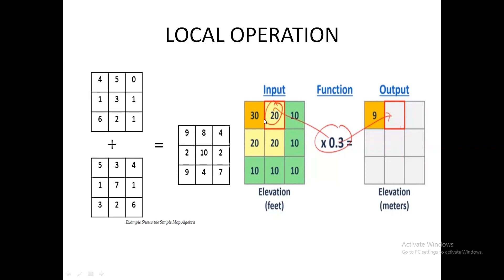Similarly, you are going to add all corresponding cells across the matrices. In the next example, you have only one grid or matrix but you have a function to process the data. The first row and first column is 30, and you want to multiply it with 0.3. So 30 multiplied with 0.3 gives an output of nine. You work on only one particular cell at a time, multiply with the function, and write the final answer. This represents your local operation — in local operation, you concentrate on only one particular cell at a time, completing it before moving on to the next grid cell. You cannot work on two or more cells at a time.